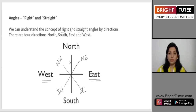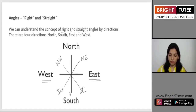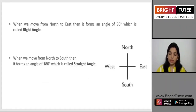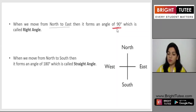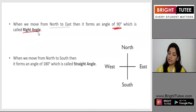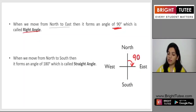The upper two we call north-west and north-east, and the ones below we call south-east and south-west. You don't say east-south — you say south-east. Now, the slide says: when we move from north to east, it forms an angle of 90 degrees. This particular 90 degree angle is also referred to as a right angle. Moving from north to east, the measure of this angle is 90 degrees.